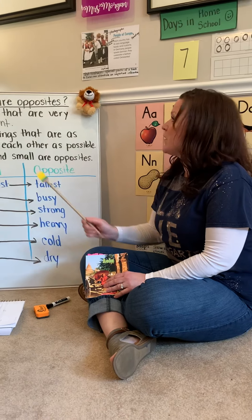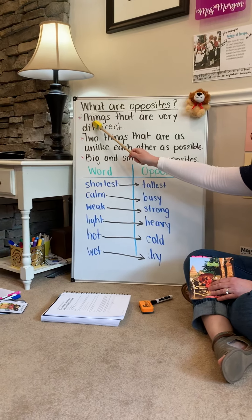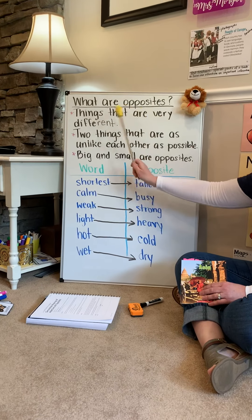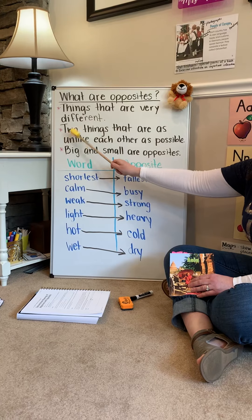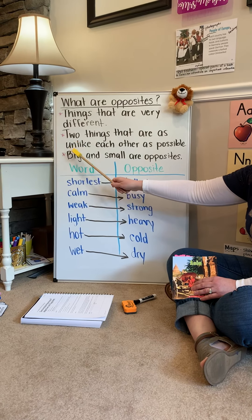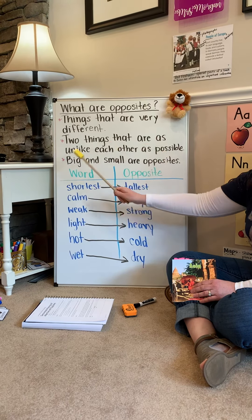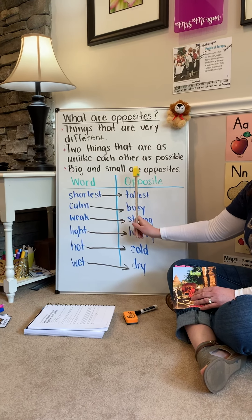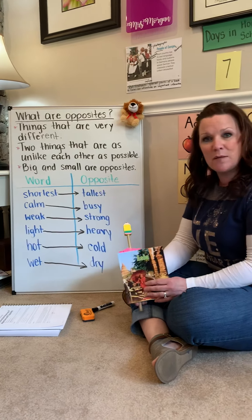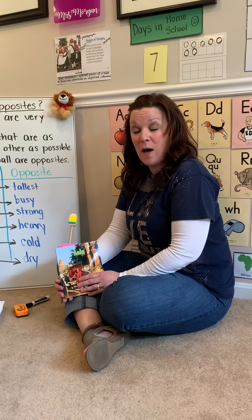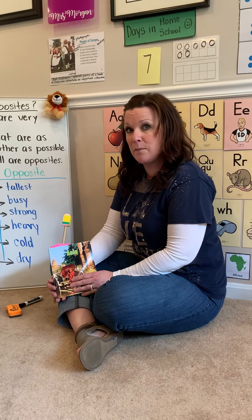So what are opposites, friends? Opposites are things that are very different. They are two things that are as unlike each other as possible. Big and small are opposites. Now why is it important to learn opposites? Well, it helps us understand the meaning of the word better.